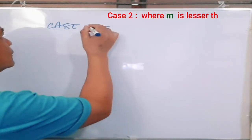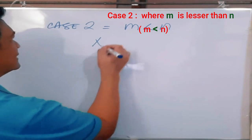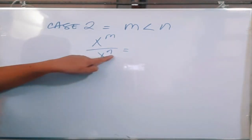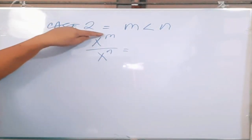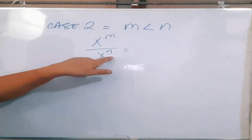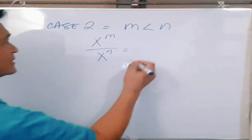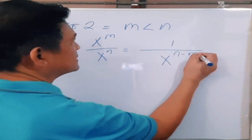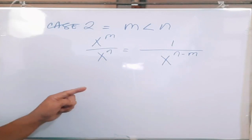Now let's take Case 2: when your m is less than your n. That means in x raised to m over x raised to n, the value of exponent n is more than the value of exponent m — the opposite of Case 1. What we do is write the result as 1 over x raised to n minus m. Remember: you always subtract from the exponent with the greater value.